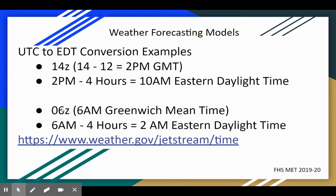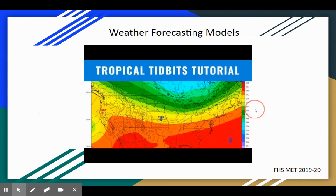One more example: 6Z. You don't need the 12-hour conversion here because 6Z is already on a 12-hour clock — it's just 6 a.m. at the prime meridian. To convert to the eastern time zone, 6 minus 4 hours gives us 2 a.m. eastern daylight time.